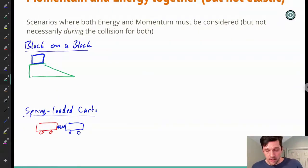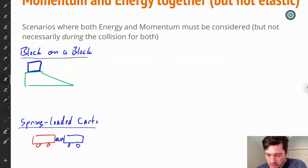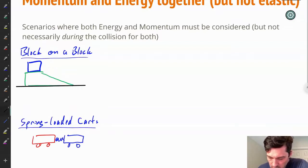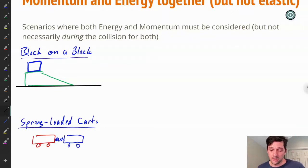Let's consider some possibilities. In these kinds of collisions or interactions, let's look at one example: a block on a block. This blue block is going to slide down the green slope, and both of these are frictionless and on a frictionless surface. The green block is free to move. So as the blue block slides down and goes to the right, it's actually going to force the green block to the left.